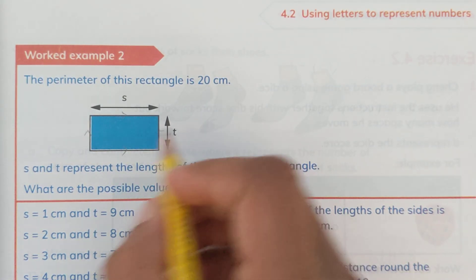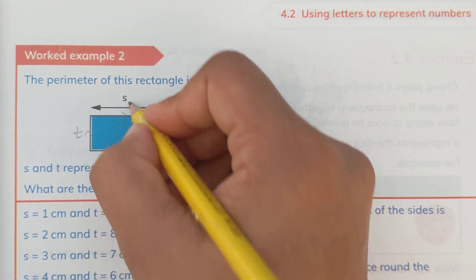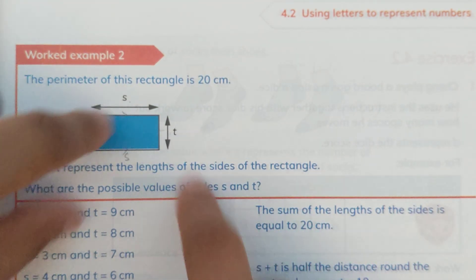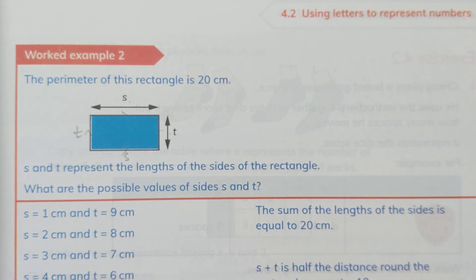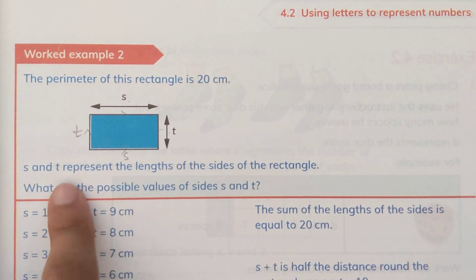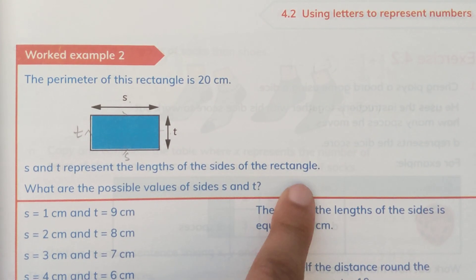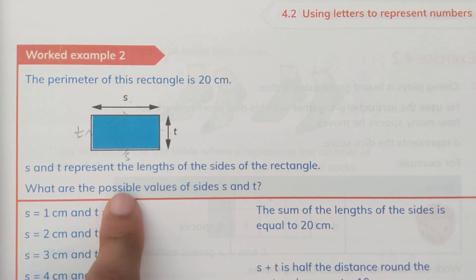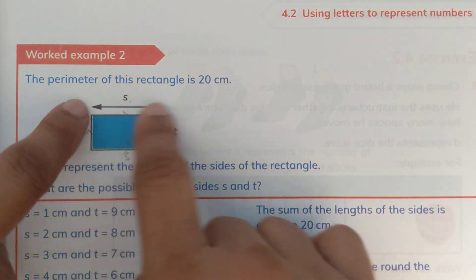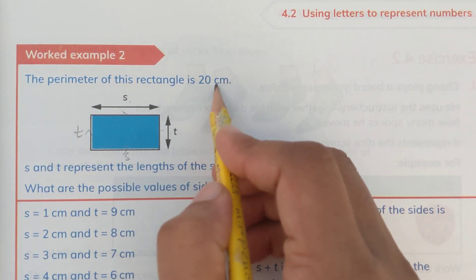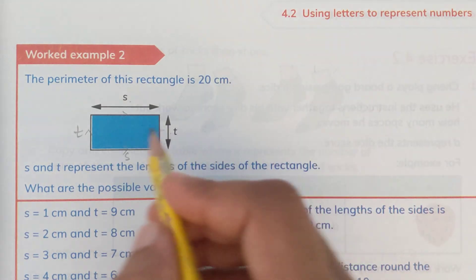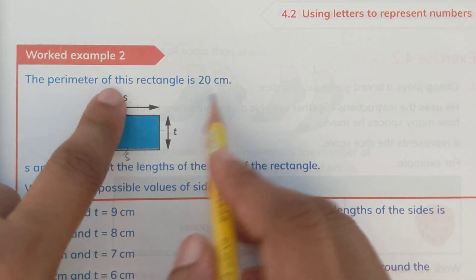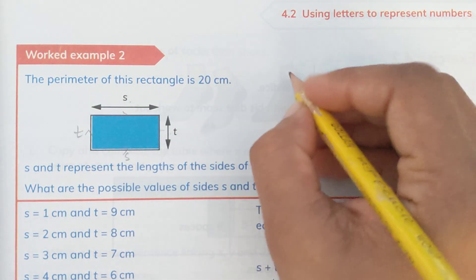We can say that if this side is t, then this side would also be t. If this side is s, then this side would also be s. So these two lengths are equal to each other and these two widths or breadths are also equal to each other. They are saying that s and t represent the lengths of the sides of the rectangle. We are required to find out the possible values of sides s and t, given that the perimeter is 20 centimeters.